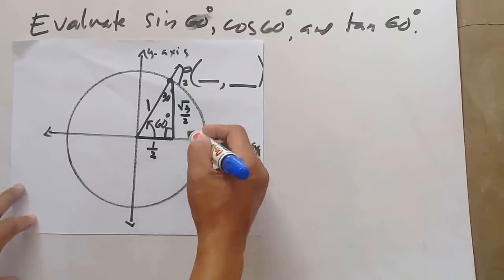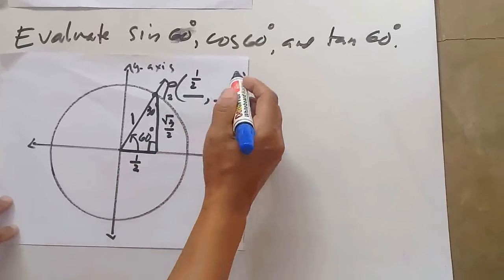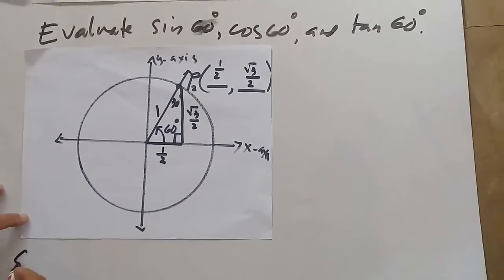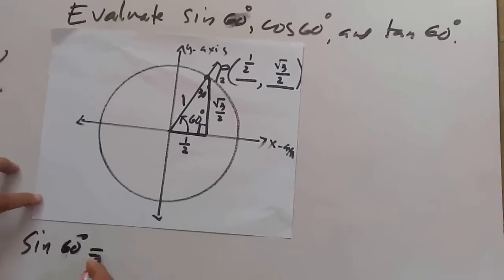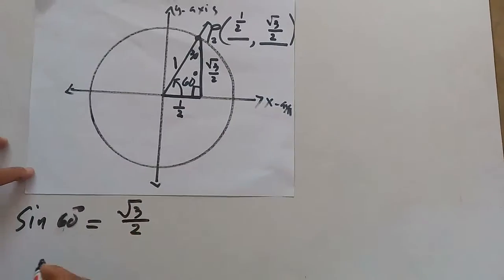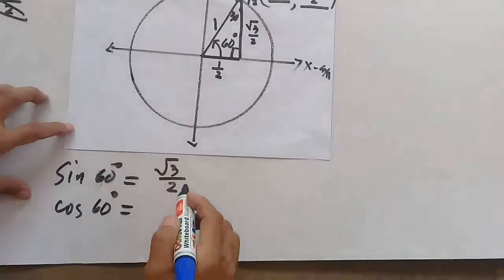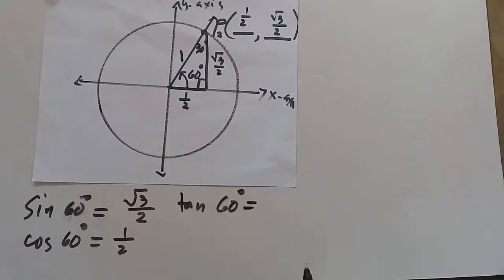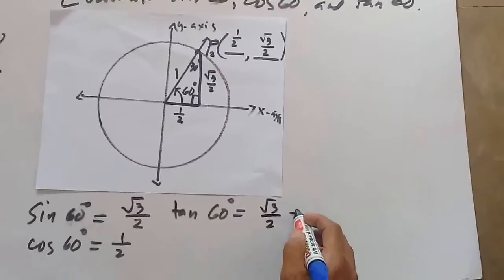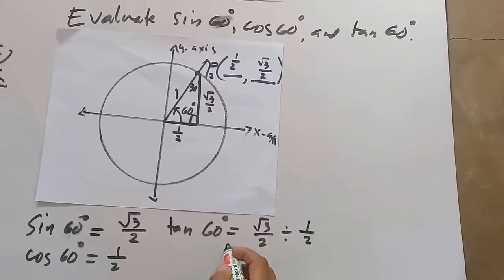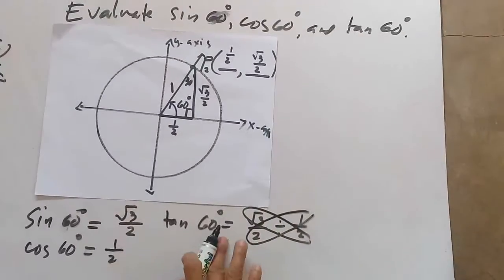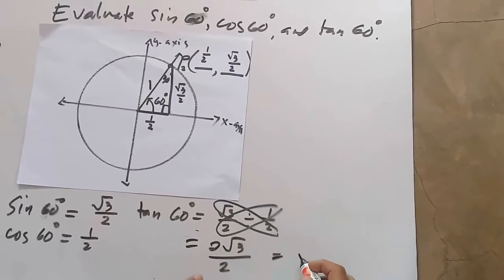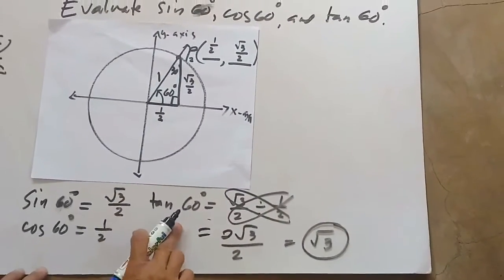Therefore, the coordinates of P sub 2 will be one half and square root of 3 over 2. Thus, sine 60 degrees is equal to the y-coordinate, square root of 3 over 2. Cosine 60 degrees is the abscissa, which is one half. And tangent 60 degrees is the ratio of square root of 3 over 2 and one half. Applying the cross product, it will be 2 square root of 3 over 2, and simplifying, it will be equal to square root of 3, which is the value of tangent 60 degrees.